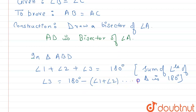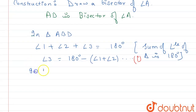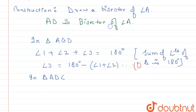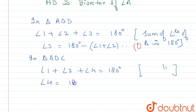Similarly, in triangle ADC, angle 1 plus angle 2 plus angle 4 equals 180 degrees, because the sum of the angles of a triangle is always 180 degrees. So we get angle 4 equals 180 degrees minus angle 1 plus angle 2. Let this be equation two.